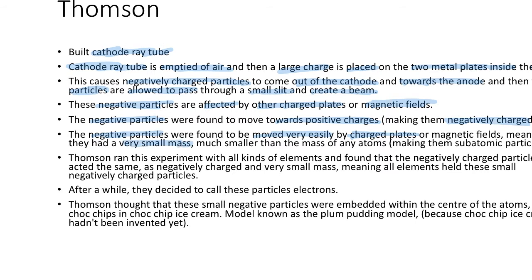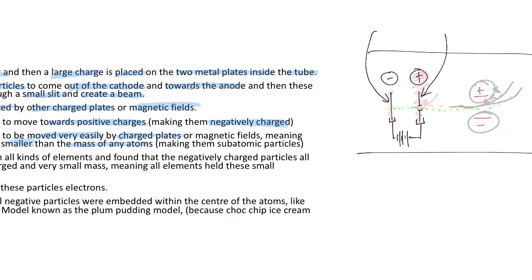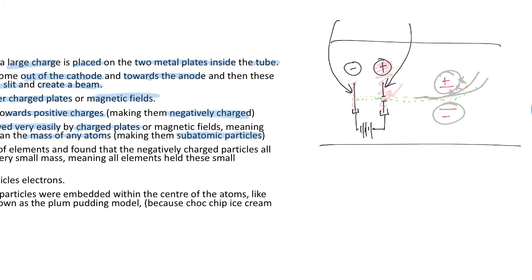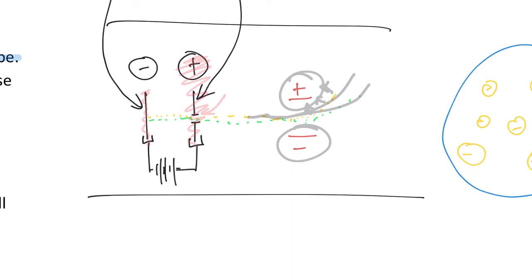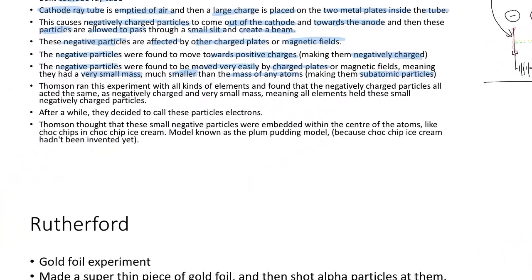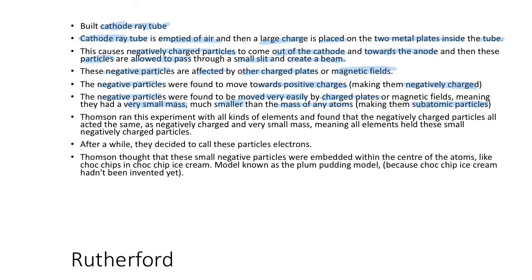Because the charged plates affecting their flight is like the wind, and things that are very light are more affected by the wind than things that are very heavy. This very small mass was much smaller than the mass of any atoms they had worked out already, meaning that they had to be subatomic — smaller than atoms — particles. This one is lighter than that one because it is more affected, and these things are very, very light, which makes them much lighter than the atoms they were supposed to be inside.